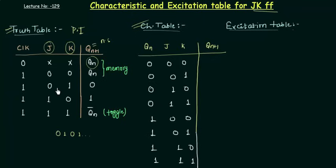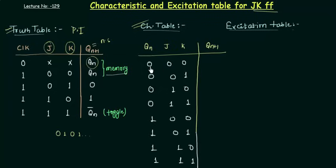Now let's use this truth table to find out the values of Qn+1 for different values of Qn, J, and K. When J and K both are 0, it is the memory state. Whatever the previous value, Qn+1 is going to be the same — it is Qn. So when Qn is 0, Qn+1 is also going to be 0.